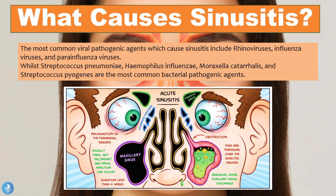Most sinusitis infections are caused by viral agents. The most common viral pathogenic agents include the rhinoviruses, the influenza viruses, and the parainfluenza viruses. While Streptococcus pneumoniae, Haemophilus influenzae, Moraxella catarrhalis, and Streptococcus pyogenes are the most common bacterial pathogenic agents. In some cases we can have bacterial causes to sinusitis, and these are the pathogenic agents involved in this process.